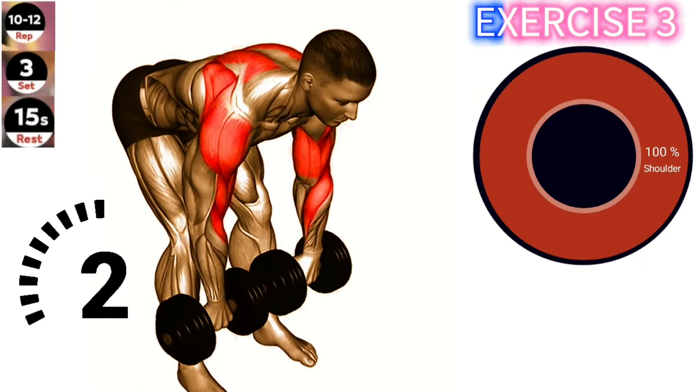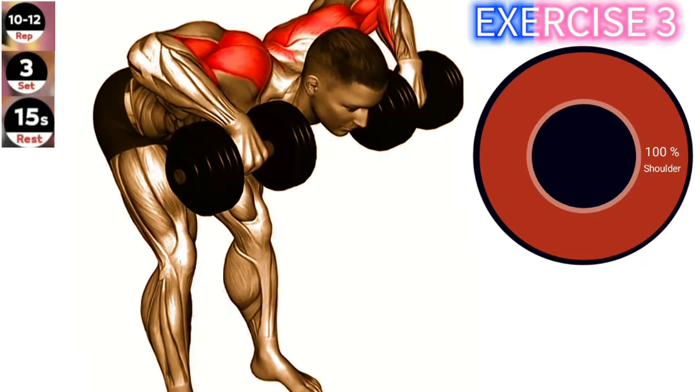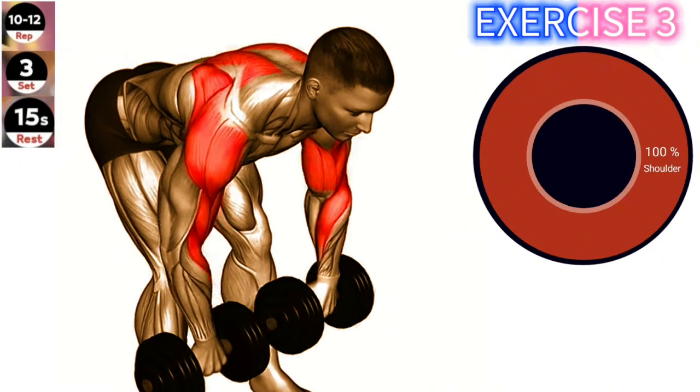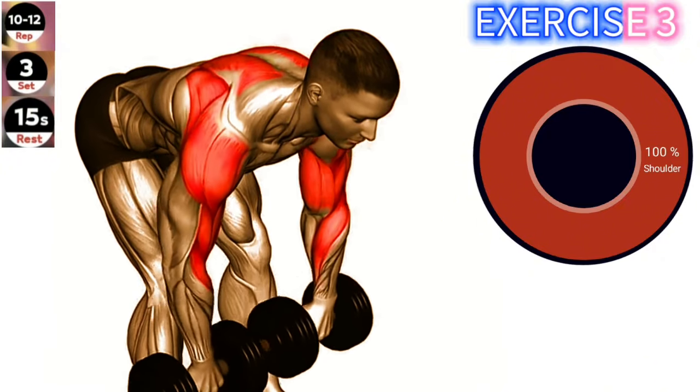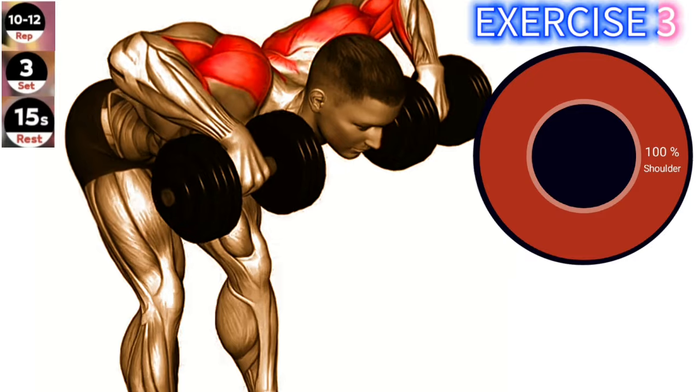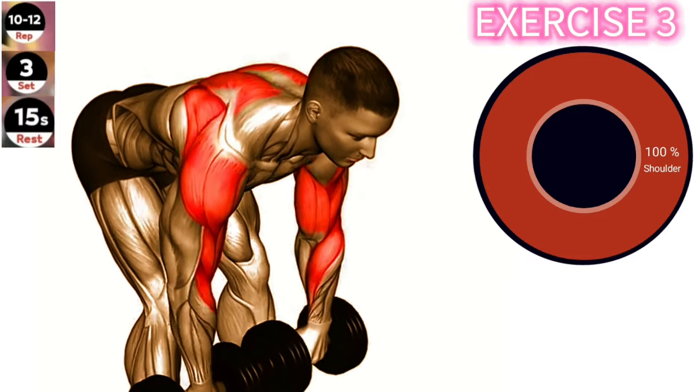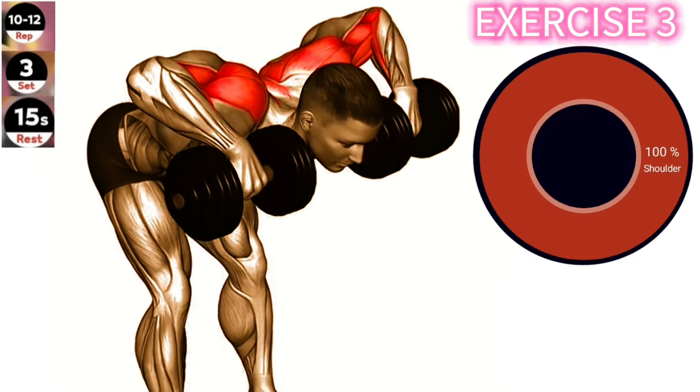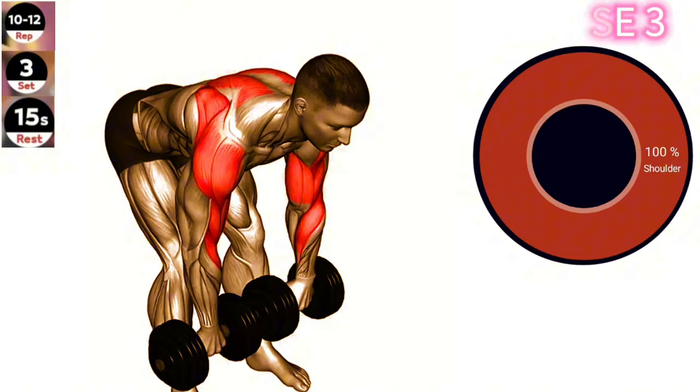Exercise 3. Dumbbell Bent Over Face Pull. Maintain a slight bend in your knees and a neutral spine throughout the movement. Focus on squeezing your shoulder blades together as you pull the dumbbells towards your face. Stand with your feet shoulder width apart, holding a dumbbell in each hand.